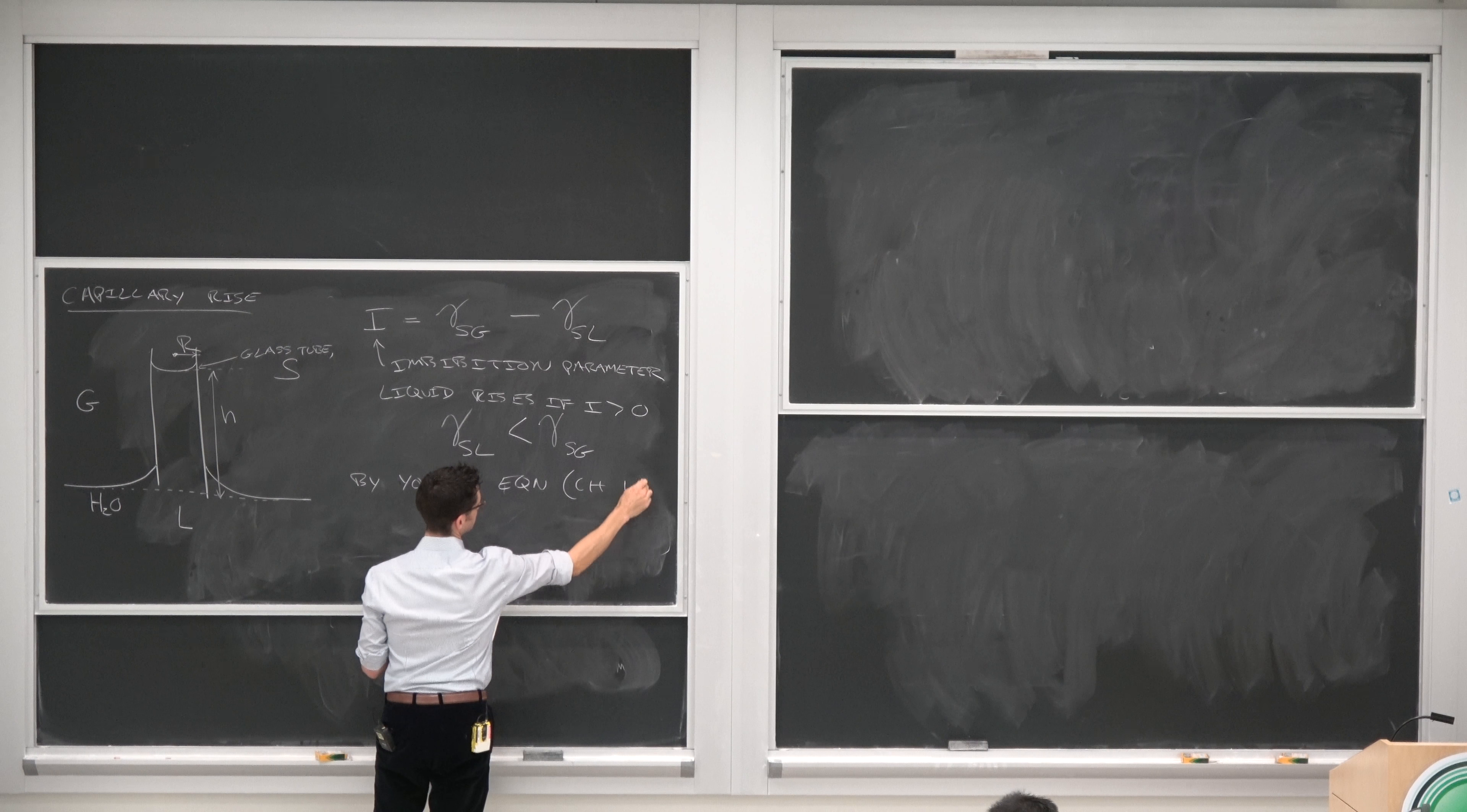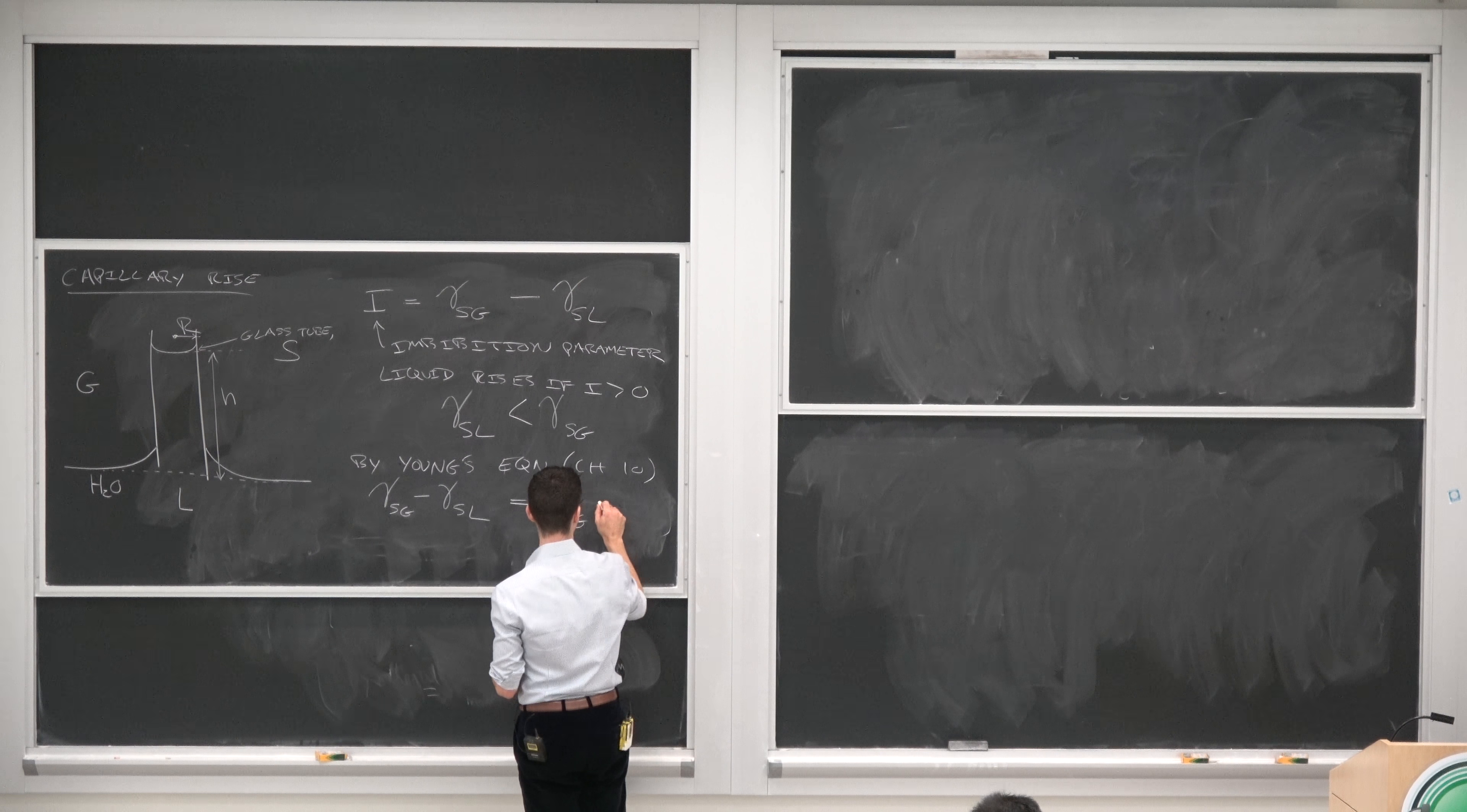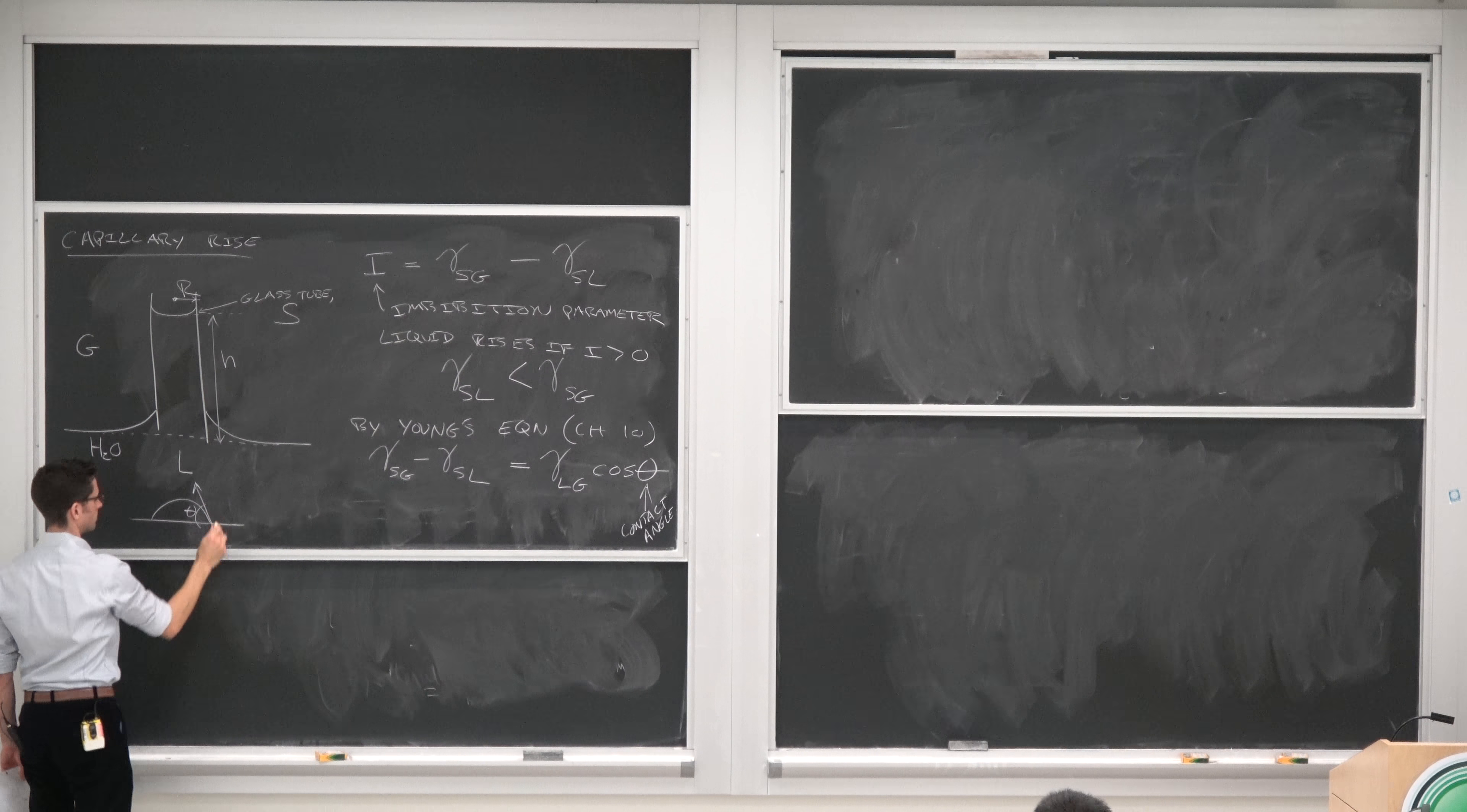And this is from chapter 10, right after the first midterm. Gamma SG minus gamma SL, which is the imbibition parameter, is gamma LG, the liquid-gas interfacial surface tension, or just surface tension, times cosine theta, where this is the contact angle.